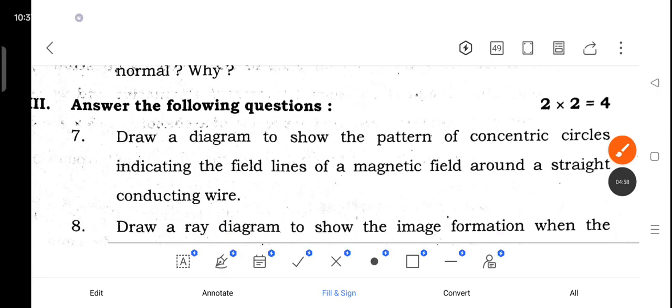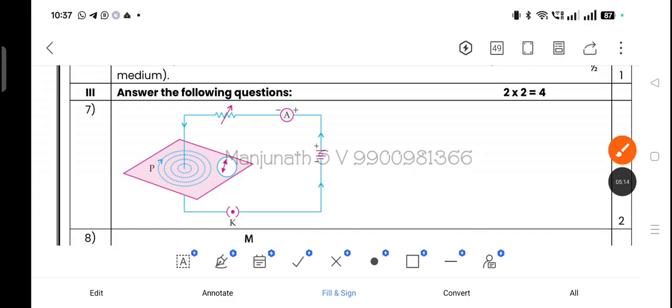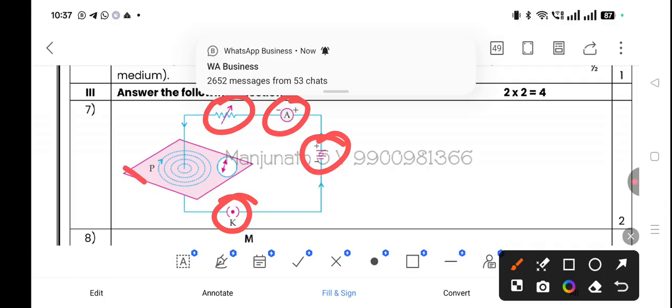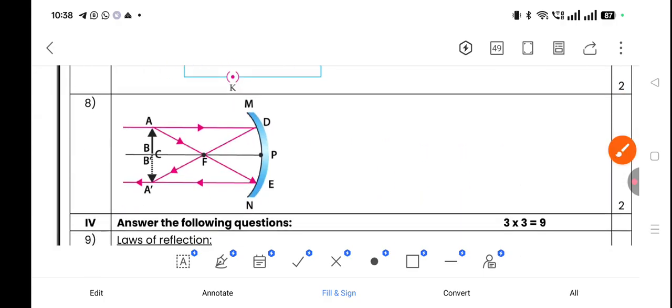Question 7: Draw a diagram to show the pattern of concentric circles indicating the field lines of magnetic field around a straight conducting wire. We take a wire connected to battery, plug key in series with ammeter and rheostat. We take a cardboard, make a hole, pass this wire through that hole and complete the circuit. Electric current starts to flow and around that wire concentric circles are formed on cardboard where we spread iron filings.